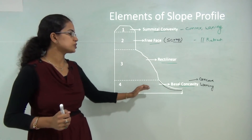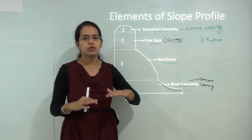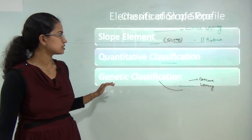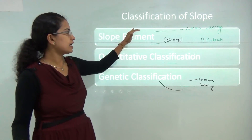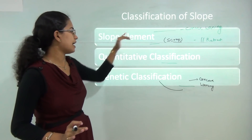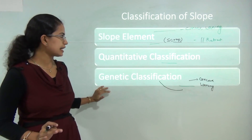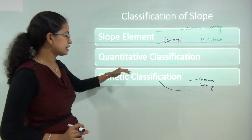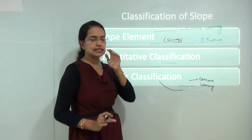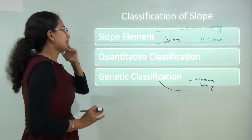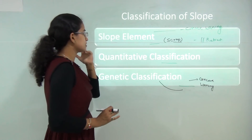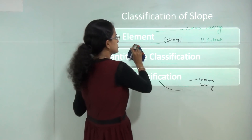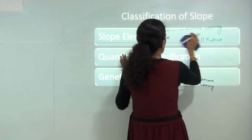When we classify slope, it can be done based on three criteria: first, the element of slope; second, the quantitative classification; and third, the genetic classification. Classifying slope based on element means there can be various types of slopes — such as concave then convex, or convex then concave.